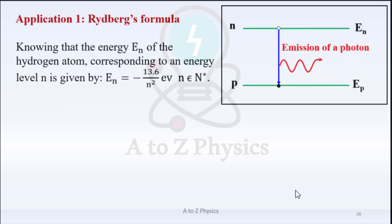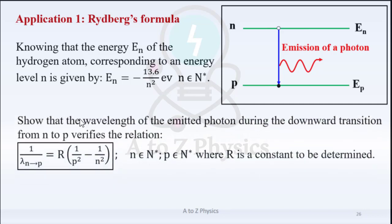Application 1: Rydberg's formula. Knowing that the energy EN of the hydrogen atom corresponding to an energy level N is given by EN = −13.6/N² electron volts, where N belongs to N*, show that the wavelength of the emitted photon during the downward transition from N to P verifies the relation: 1/lambda = R × (1/P² − 1/N²), where N and P belong to N* and R is a constant to be determined.